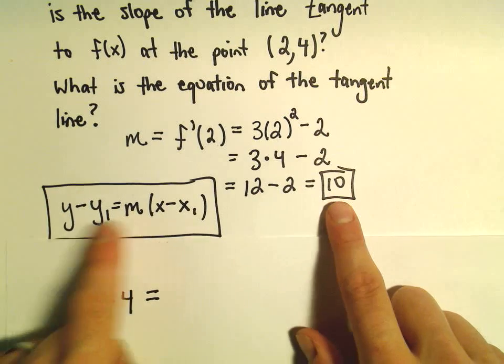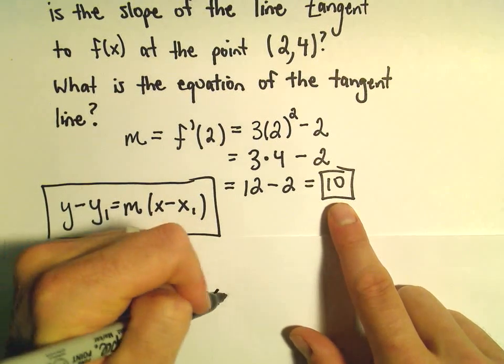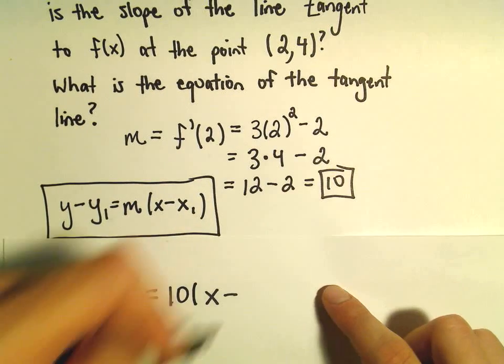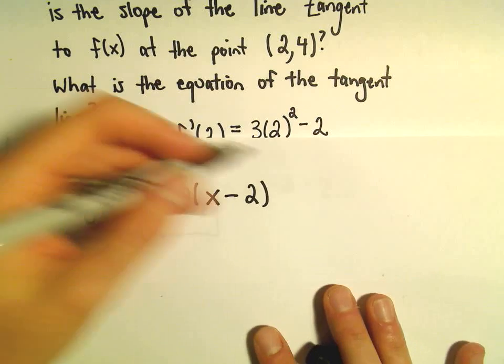Equals the slope of the tangent line - that's what we had to work to figure out. And then we'll take x minus the x coordinate, which is positive 2. And we've now got the equation of our line.